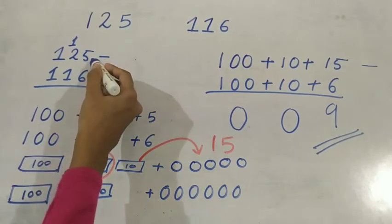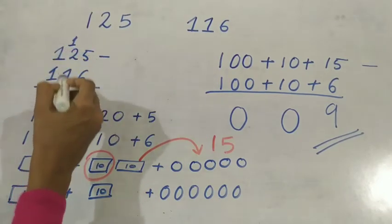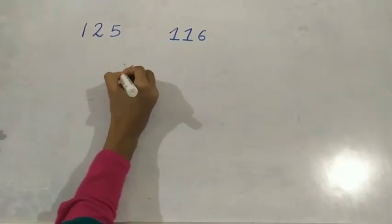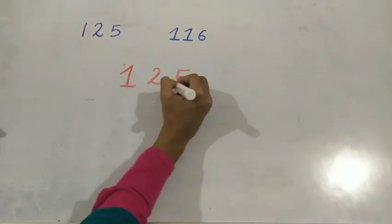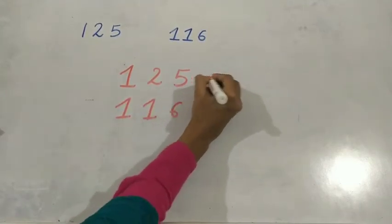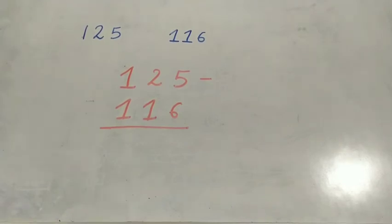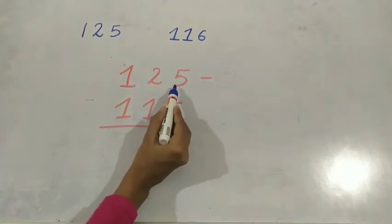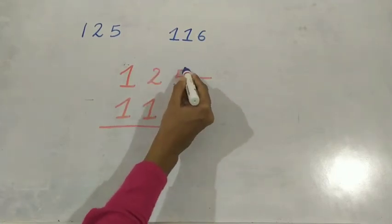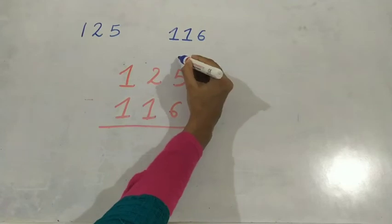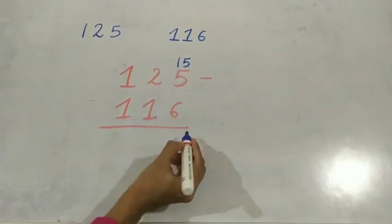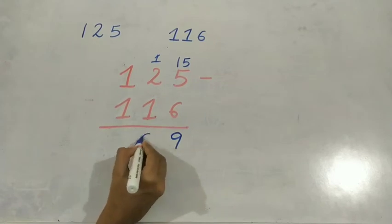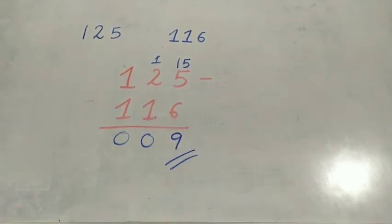So 15 minus 6 is 9. 1 minus 1 is 0, and 0. So 9 is the answer. The numbers were 125 and 116. We can't minus 6 from 5, so I took the 10 to the ones place. How much will be here? 15. So 15 minus 6 is 9, then 1 minus 1 is 0, and again 1 minus 1 is 0. So the answer is 9.